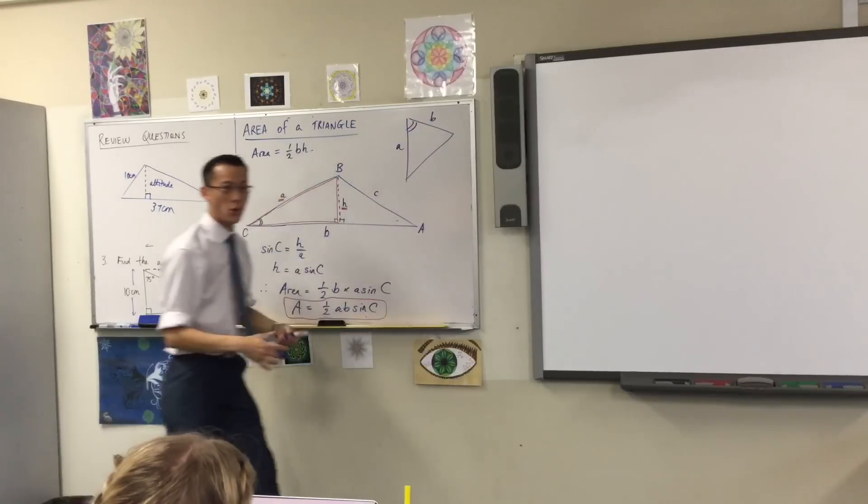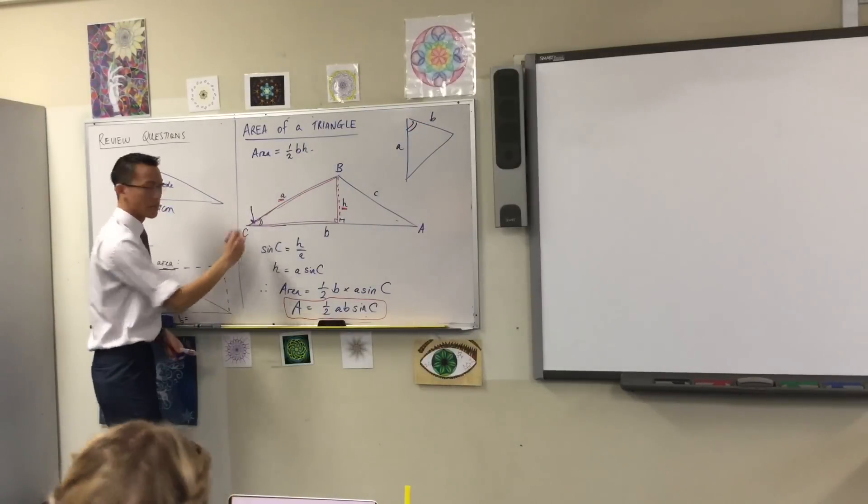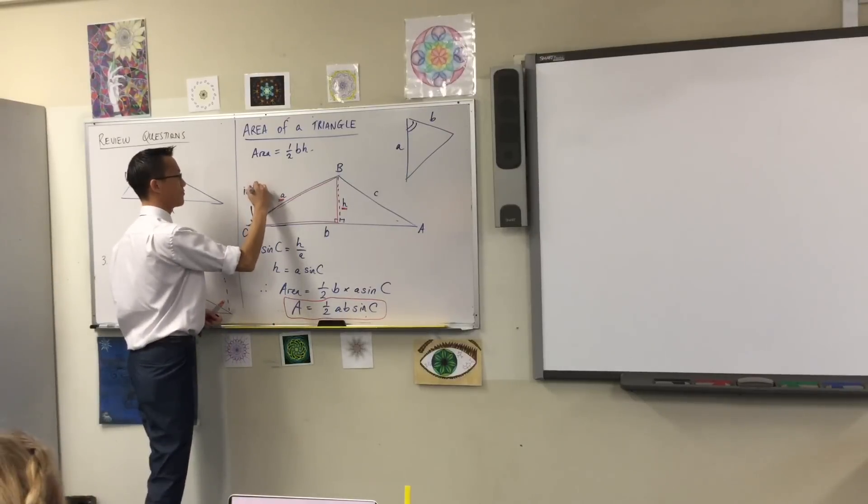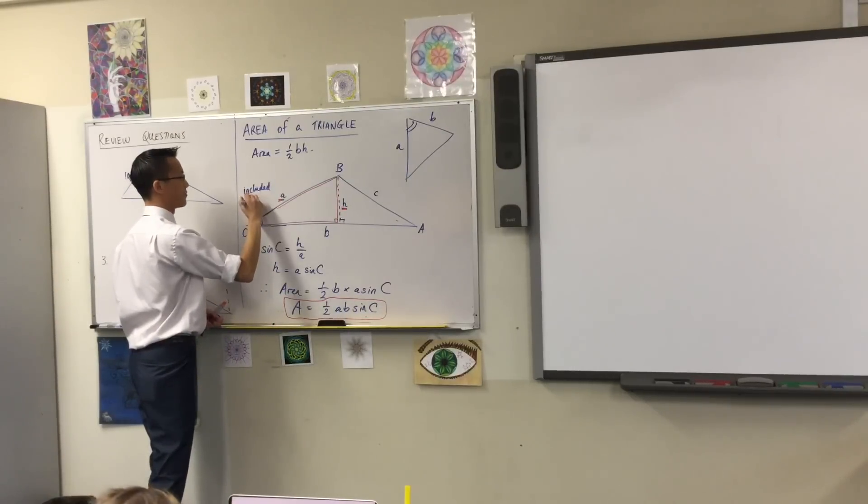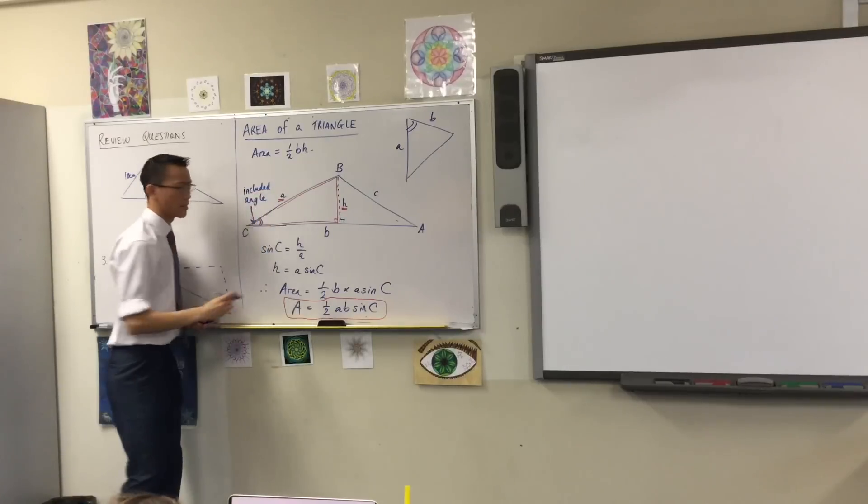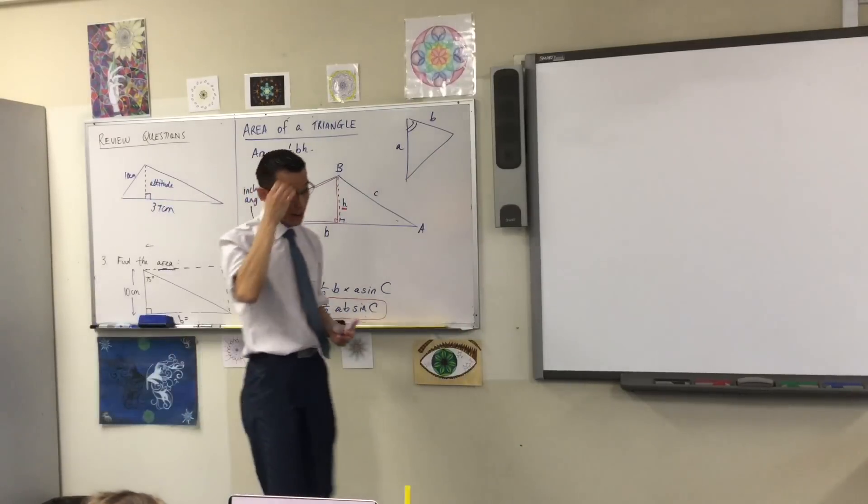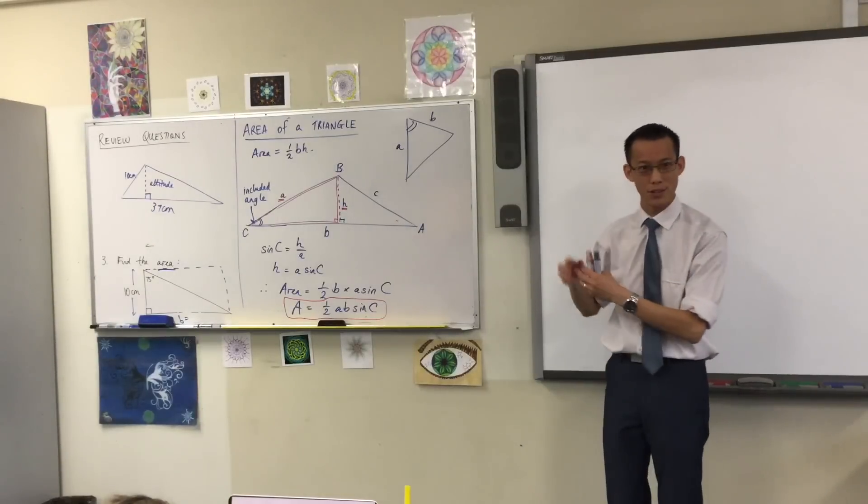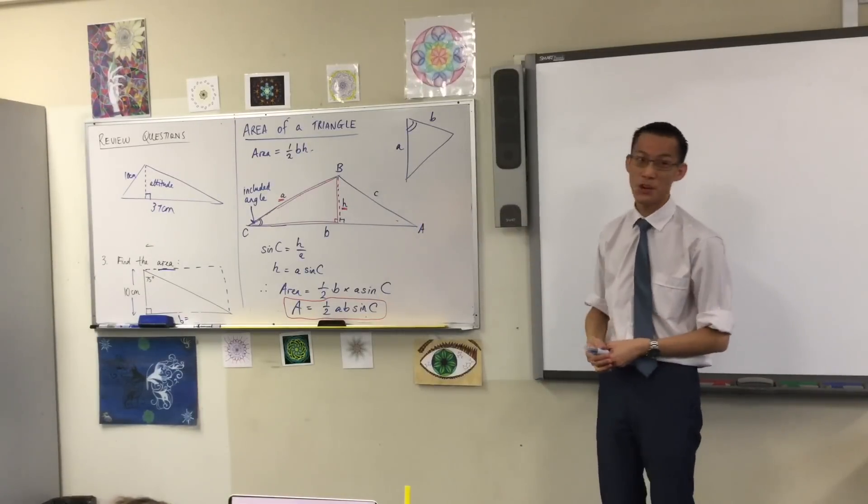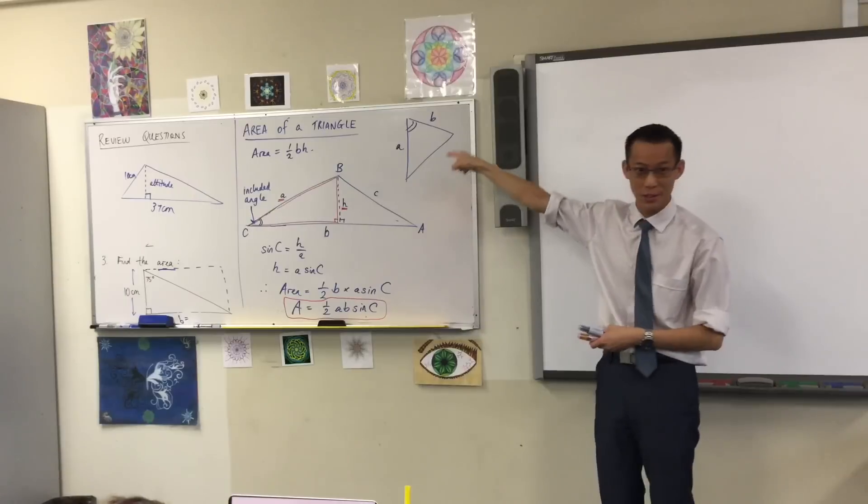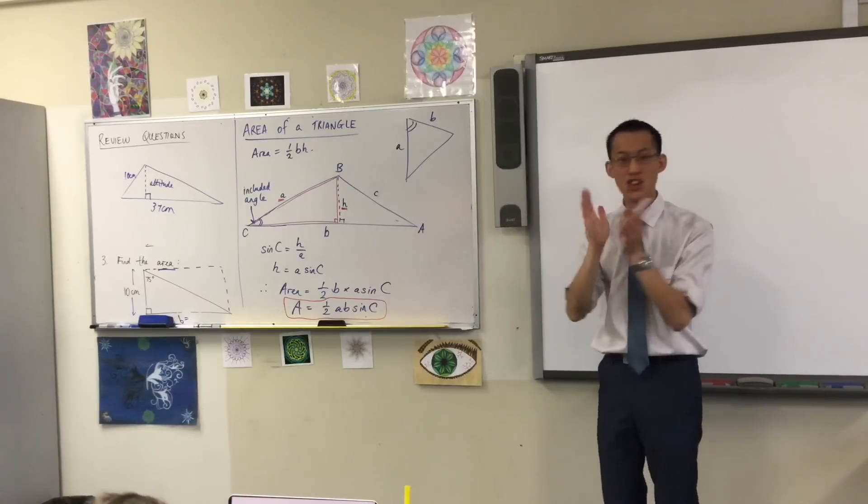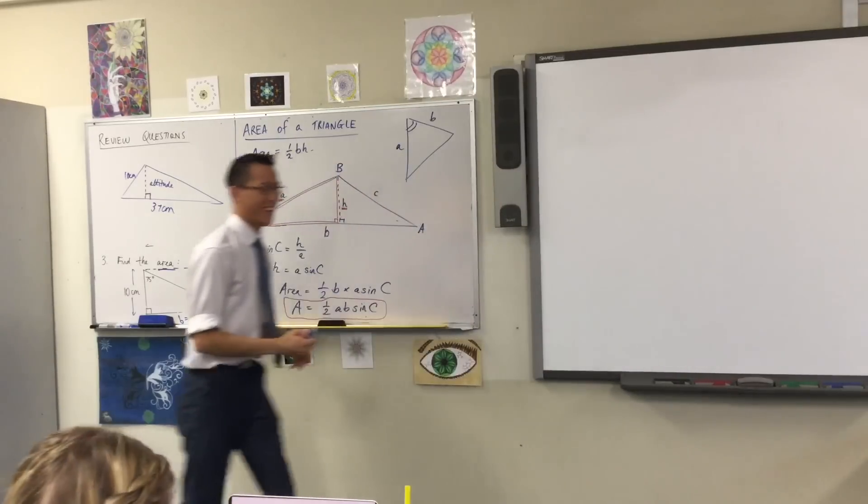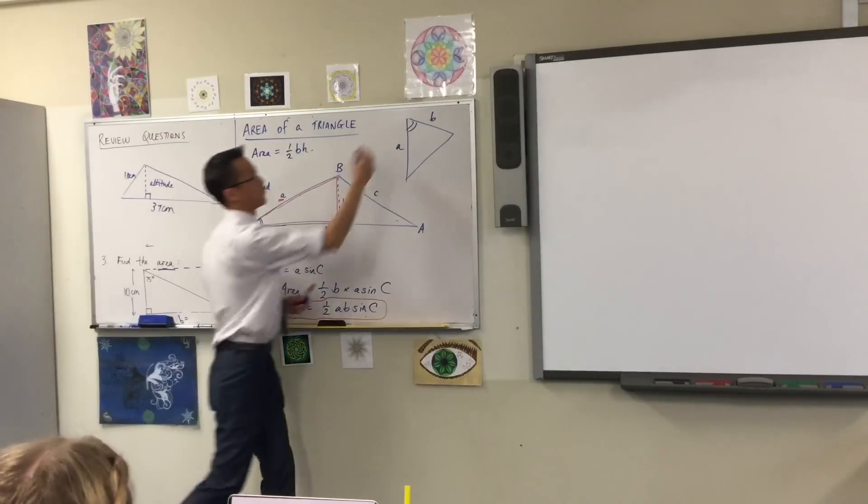We have a fancy name for that. We call it, and this is worth actually labeling onto your diagram, we call it the included angle. Okay? Because we all know what it's like when you've got two friends and they're watching something on their phone and they've got their two headphones and then you're over there on the edge and you're excluded. Well, this is the included angle and it's right between them. You've got to use that one. You'll get something else otherwise.